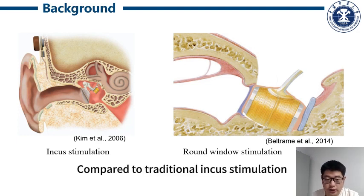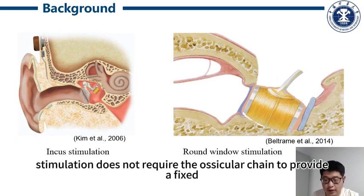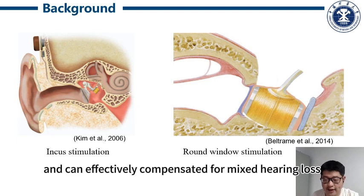Compared to traditional ossicular stimulation, the round window stimulation does not require the ossicular chain to provide a fixed position and can effectively compensate for mixed hearing loss.